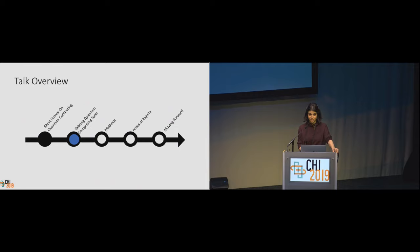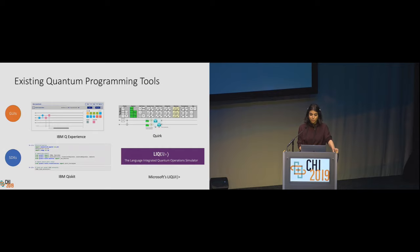There are a number of tools available for programming quantum systems, both in simulation and with actual hardware. GUIs such as IBM's Composer and Quirk enable people to program their own quantum circuits and visualize the results. There are also programming languages and SDKs such as IBM's Qiskit and Microsoft's LIQUi|> that allow people to develop quantum algorithms and run them in simulation, sometimes on actual hardware.